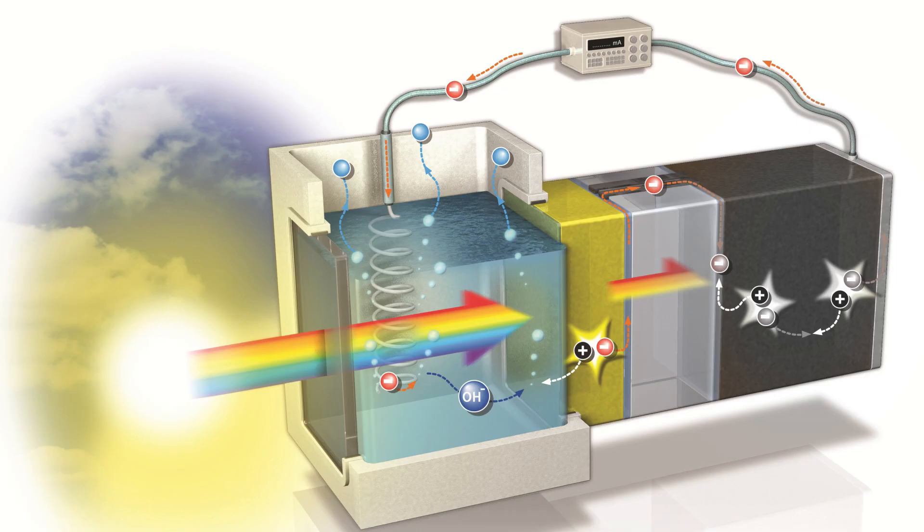We then collaborate with a solar cell group here in Delft by combining our bismuth vanadate with an amorphous silicon solar cell which is also cheap and abundant.